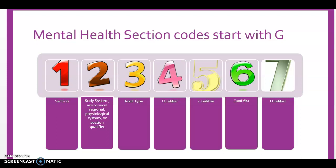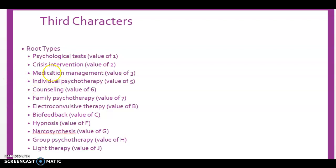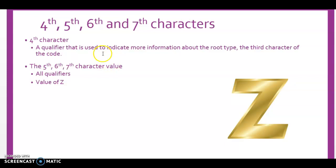Characters four, five, six, and seven are all qualifiers. Some of the root types for the third character in the mental health section include psychological tests, crisis intervention, medication management, individual psychotherapy, counseling, family psychotherapy, electroconvulsive therapy, biofeedback, hypnosis, narcosynthesis, group psychotherapy, or light therapy. The fourth character qualifier is used to give more information about the root type, and characters five, six, and seven are always Z for none.